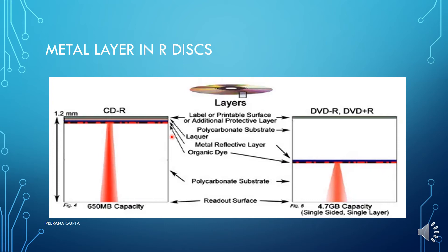Aluminum is not used in recordable discs because the organic dye used in the data layer would start a reaction and spoil the whole disc. That is why gold, silver, or silver alloy is used in the metal layer for recordable discs.